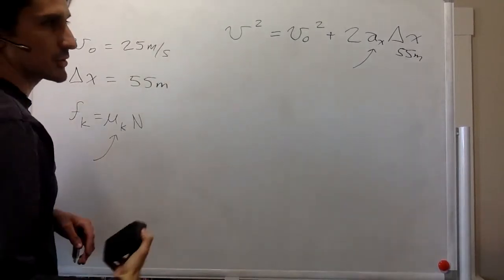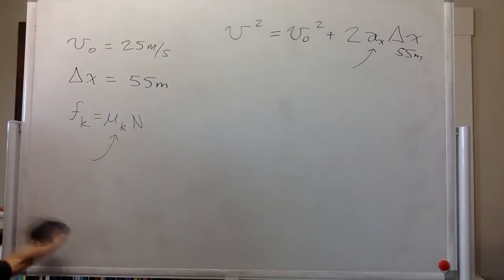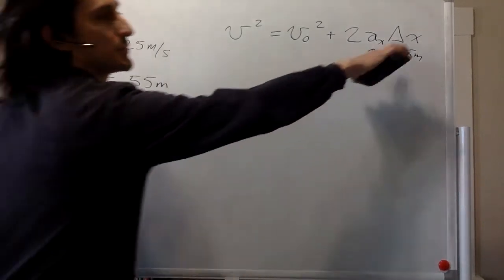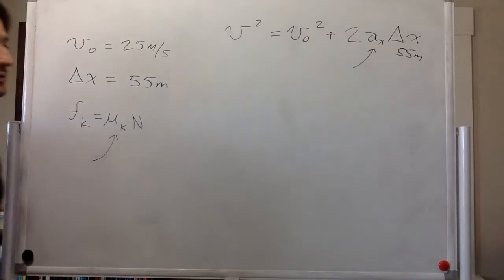Right, so you're going to brake in a shorter distance. And if mu k is smaller than that, then this is going to be larger and you're going to hit the hole.